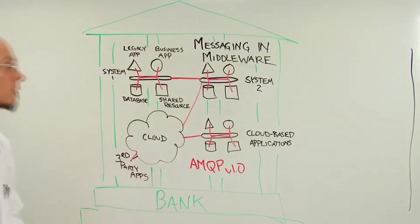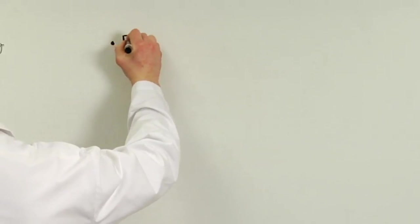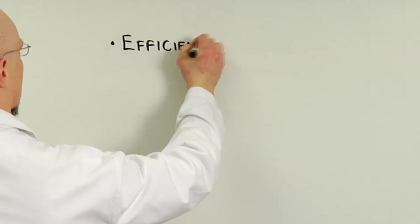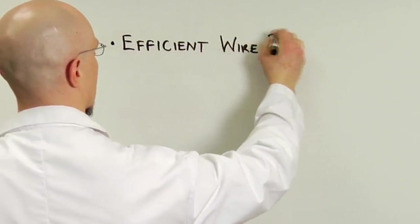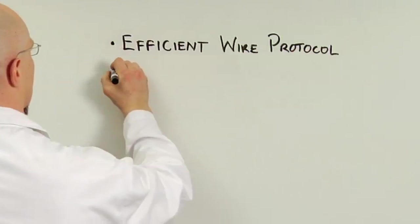The new features provided by AMQP version 1.0 include an efficient wire protocol, which separates the wire from broker architectures and management.